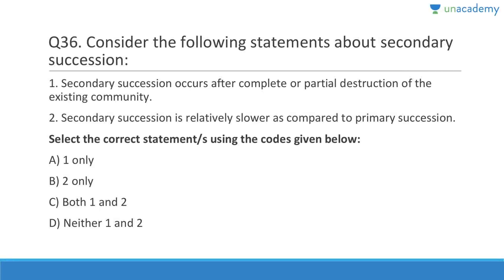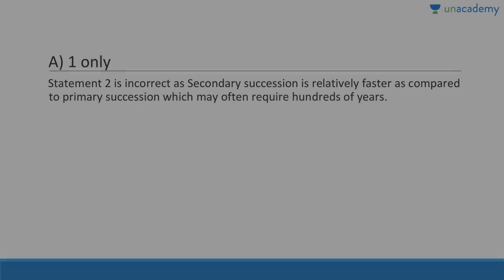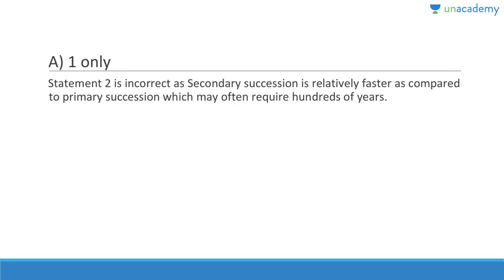Question thirty-six: Secondary succession occurs after complete or partial destruction of the existing community — correct. It is relatively slower than primary succession — that is wrong. Answer is A, one only. Secondary succession will be faster than primary succession because primary succession may take hundreds of years, but secondary succession can happen in a few years or even some decades.